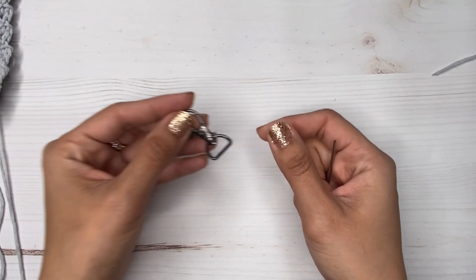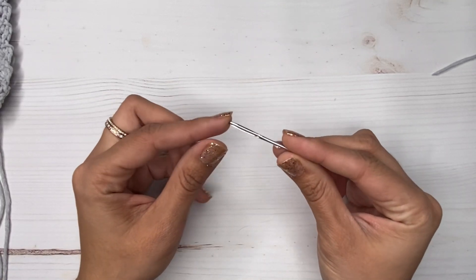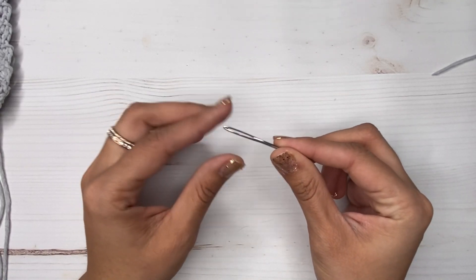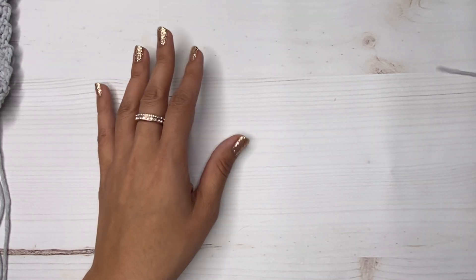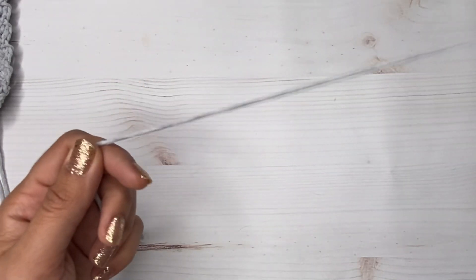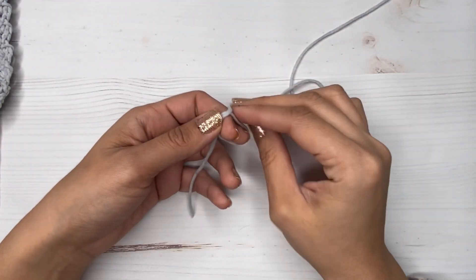And this is the clasp that I use. I will also link it in the description below because I got a bunch of them on Amazon and I love them. And a yarn needle and some scissors and a ruler. So to get started, we're going to start with our slip knot.